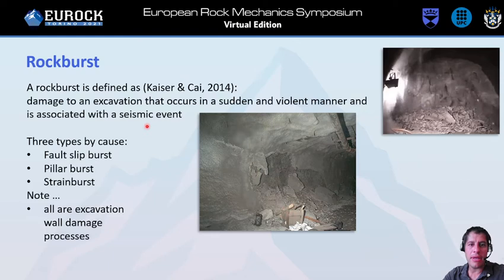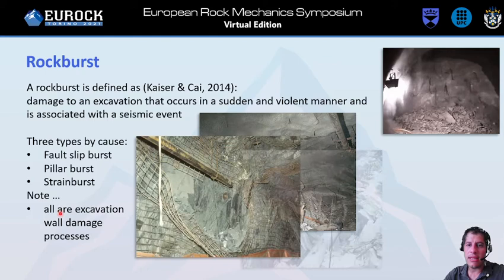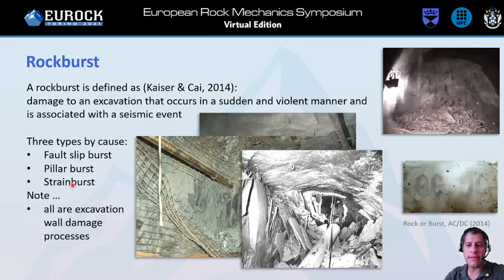Kaiser and Kai in 2014 came with this definition of rock burst: damage that occurs in a sudden and violent manner, usually associated with a seismic event. There are three types by cause and all of them are excavation wall damage processes, as you can see in these pictures here.